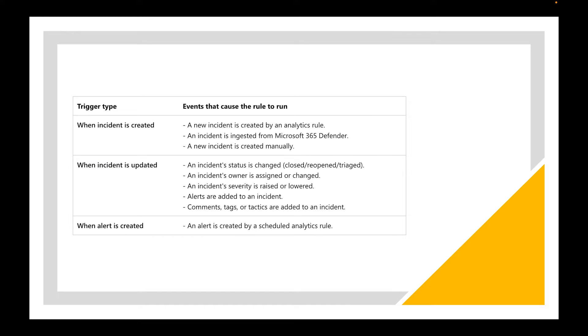Going back to trigger types: you have 'when incident is created,' 'when an incident is updated,' and 'when alert is created.' These are the three different trigger types available for your automation rules.